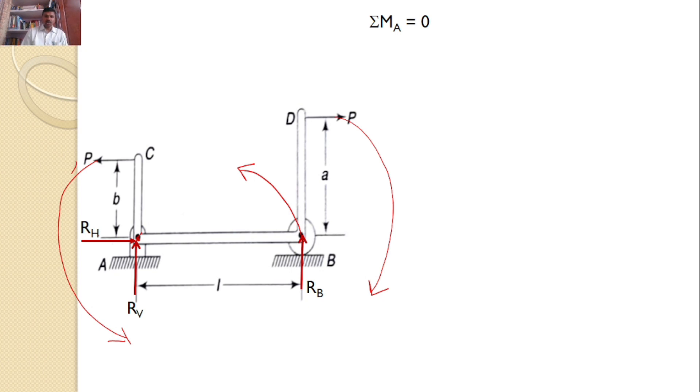So these two will act in one direction, this will act in the opposite direction. We know the distances: this distance is b, this distance is L, and this distance is a. Hence, P into b minus P into a plus RB into L equals 0.